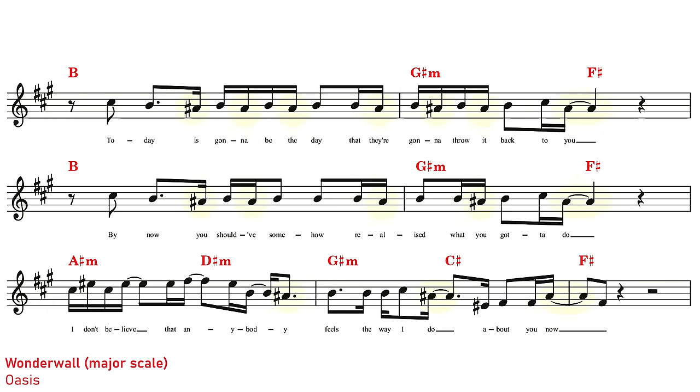To switch Wonderwall into the major key, all I had to do was take all of the minor thirds, the A naturals and sharpen them up to A sharps. I've also got to take Wonderwall's 7th degree and raise it up to where it would be in the F sharp major scale which would be the note E sharp, and finally swap in chords from the F sharp major scale rather than the original F sharp minor chords.